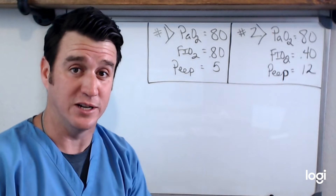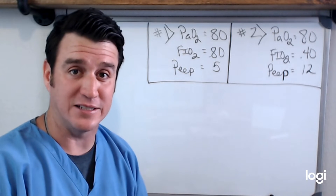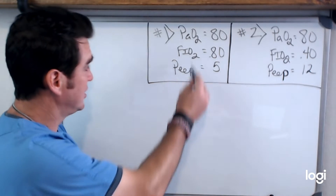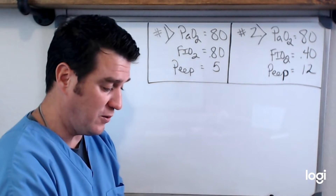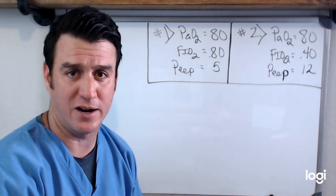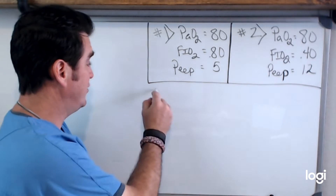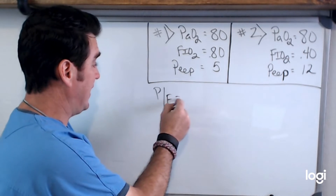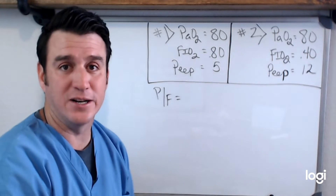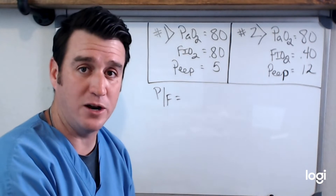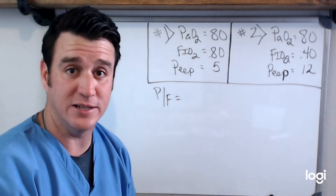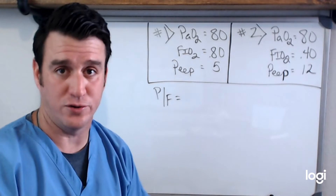The first thing we're going to notice is that we're going to have a variance in our PF ratio. So if we take patient number one and we do 80 divided by 0.8 — we don't even need a calculator for this because 80 divided by 0.8 is 100. Anytime your PaO2 matches your FiO2, your PF ratio is equal to 100.